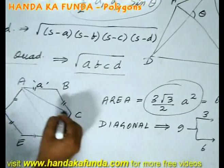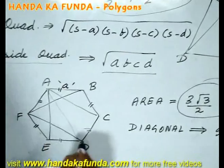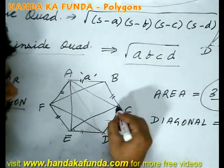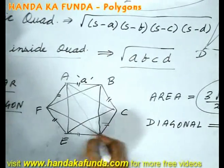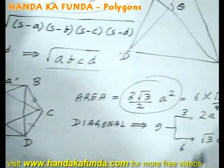Which ones are those? AC, AE, FB, FD, EC, and BD. And the length of all six of them is going to be root 3a.